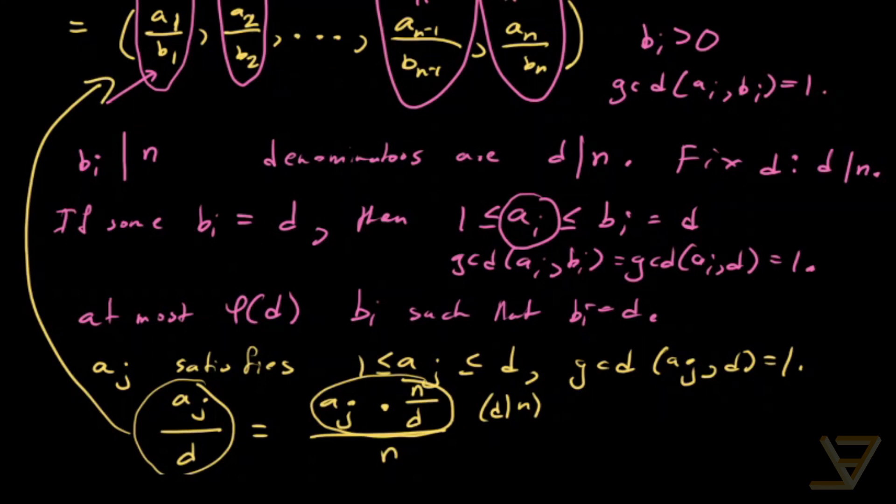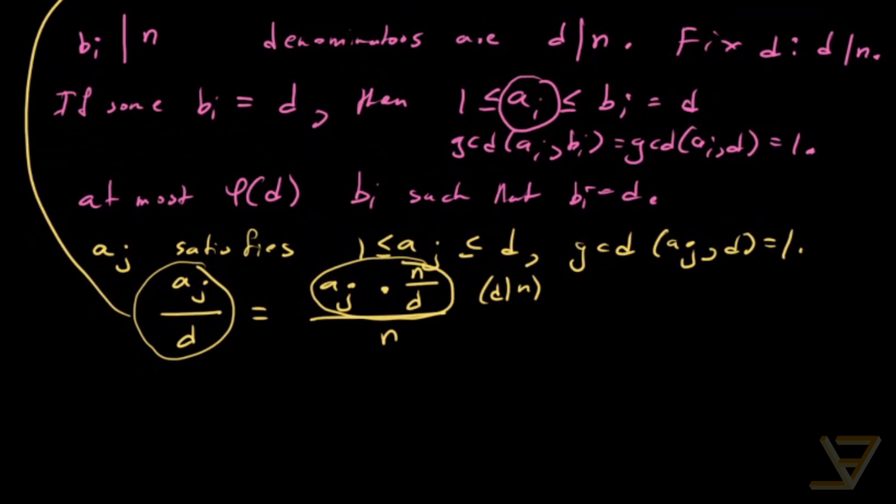And the last thing we need to show is that they're all distinct and they are distinct because if let's say as over d is equal to at over d, well, that's true if and only if as is equal to at. So there is an injective idea here.